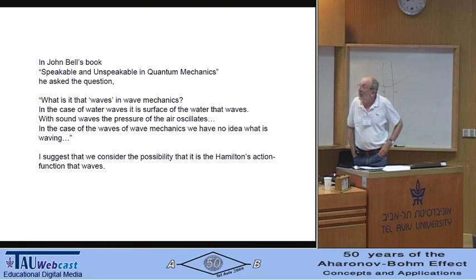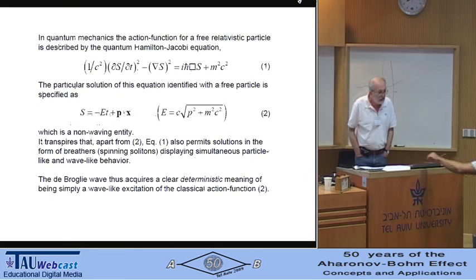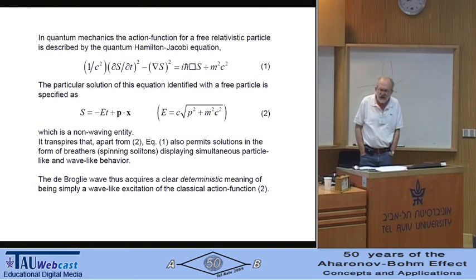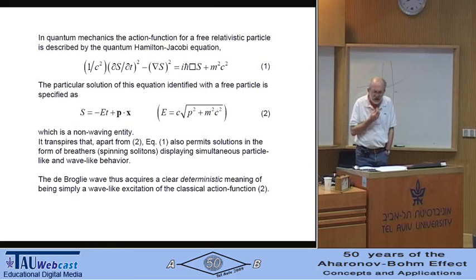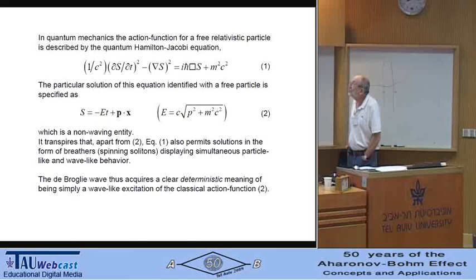More specifically, in quantum mechanics, the action function for a free relativistic particle is described by the quantum Hamilton-Jacobi equation, which you see here. The particular solution of this equation is normally identified with a free particle, specified as s = -Et + px, which is clearly a non-waving entity.